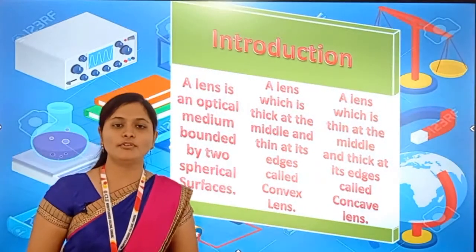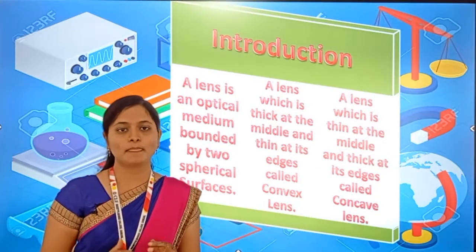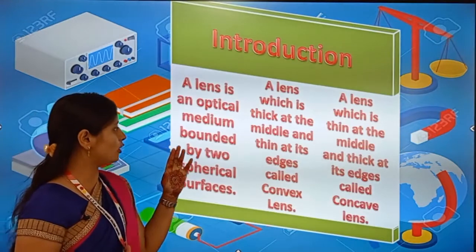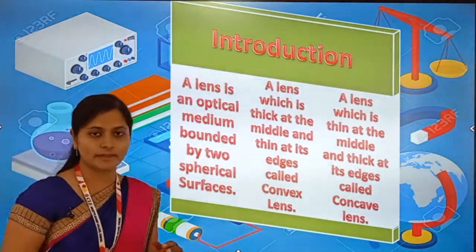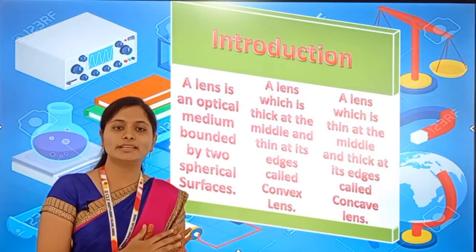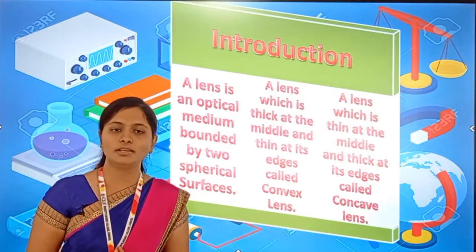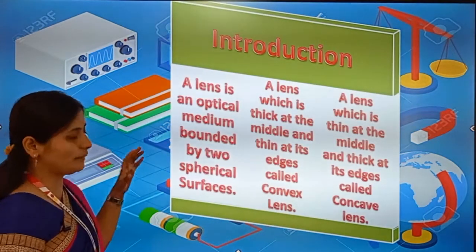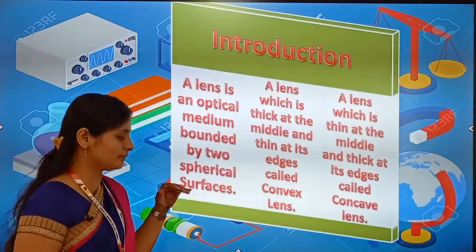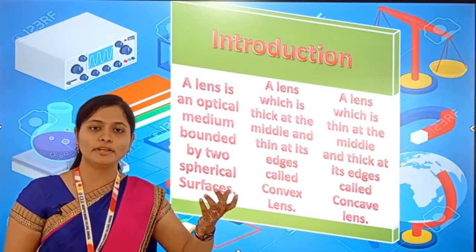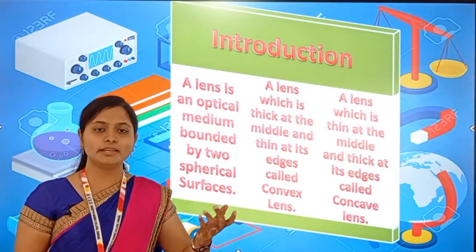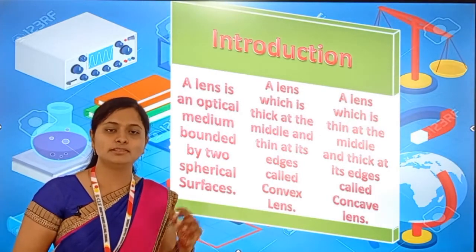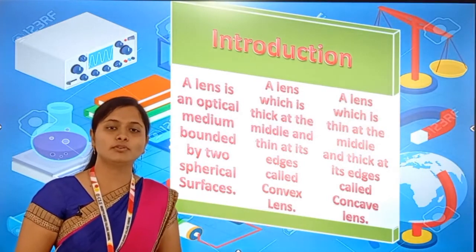First of all we will see the introduction part. A lens is an optical medium bounded by two spherical surfaces. Here one optical medium is there, bounded by two spherical surfaces — that is known as a lens.